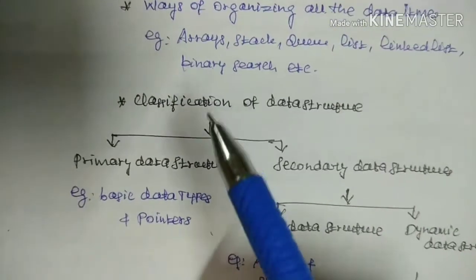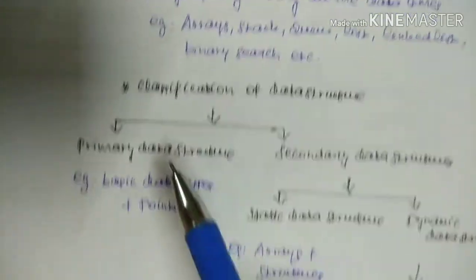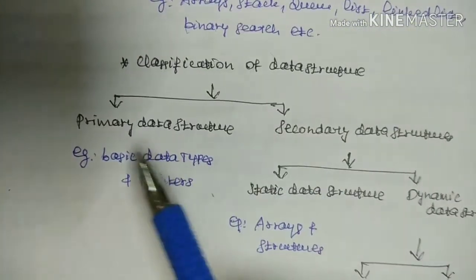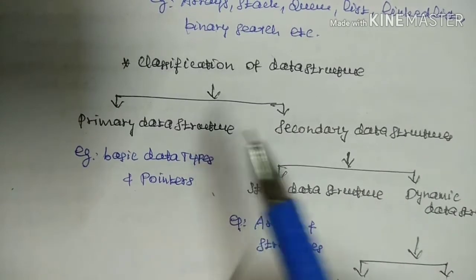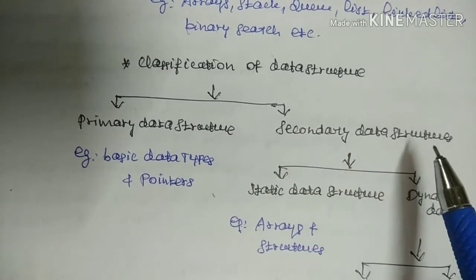Next, Classification of Data Structure. It has two types: the first is Primary Data Structure, and the second is Secondary Data Structure.